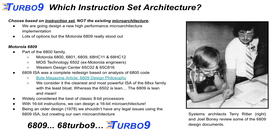One of the nice things about the 6809 is that it has 16-bit instructions. It's an 8-bit processor but has 16-bit instructions, which means we can design a 16-bit microarchitecture to take advantage of this. Being an older design from 1978, we shouldn't have any legal issues using the 6809 ISA while creating our own microarchitecture. That's where we get our name — we're based on the 6809 ISA, but we're the faster implementation. So: the Turbo 9.